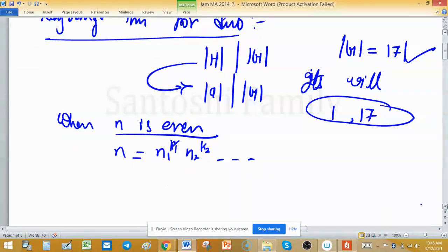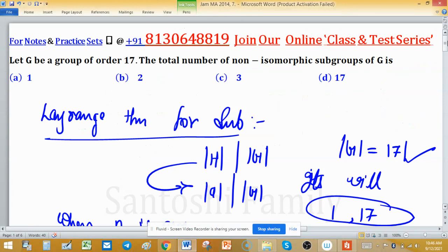Then we need to take partition of its powers of primes: p(k1), p(k2), and so on. Then we need to add them up. This will give you the total number of non-isomorphic subgroups when n is an even case.